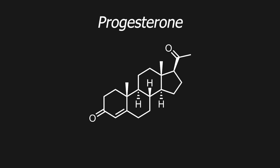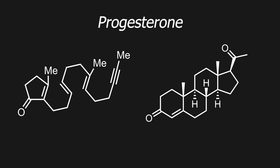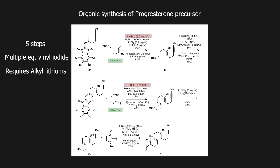Let's look at an example, for the synthesis of the hormone progesterone, which is made from this precursor. To make this precursor through regular organic synthetic methods requires five steps. Multiple equivalents of vinyl iodide and alkyl lithiums are needed for each coupling, protecting groups needed to be installed and removed. And overall, that makes the efficiency poor and the synthesis more complicated.